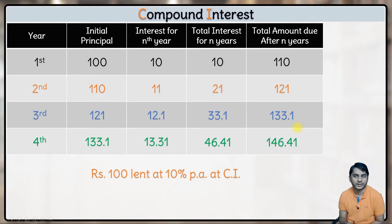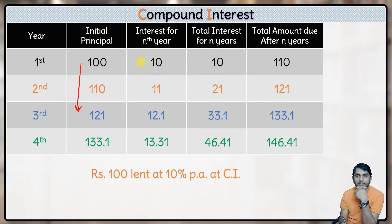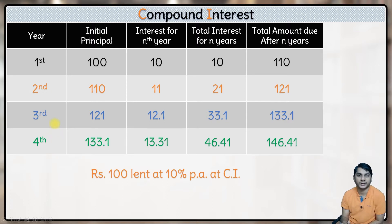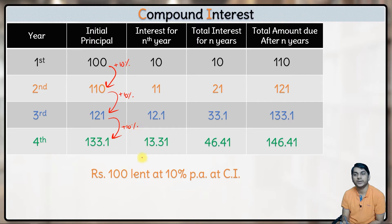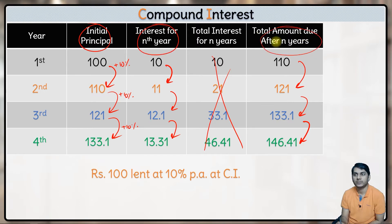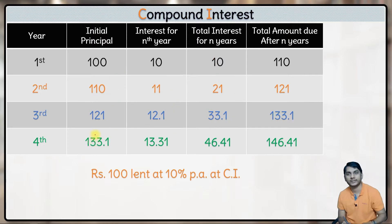So this is the table for compound interest. As we discussed in simple interest, the principal remains the same every year, so the interest every year also remains the same — but that is not the case here. Do you see any pattern in the initial principal, interest for the nth year, and the total amount due? The pattern here is that all of them are increasing by 10% every year. 100 increased by 10% gives 110, then 121, and so on. All these values increase by 10% every year because the rate of interest is 10%.